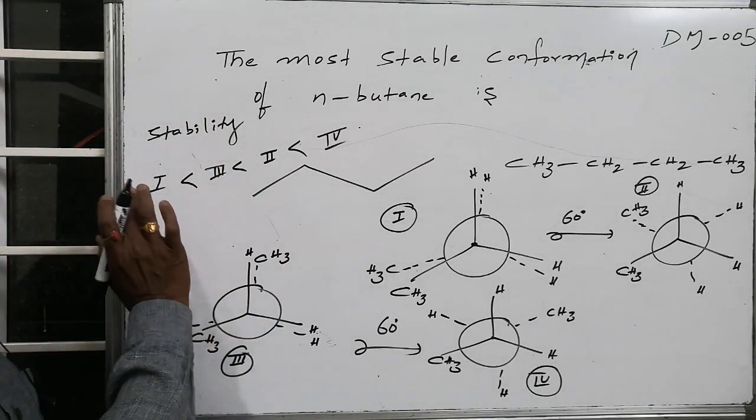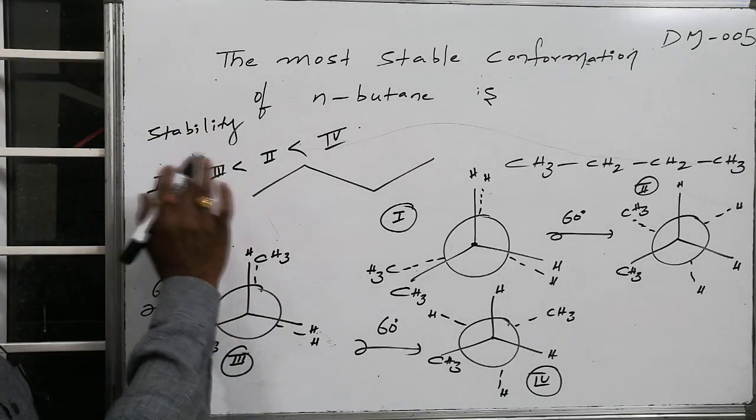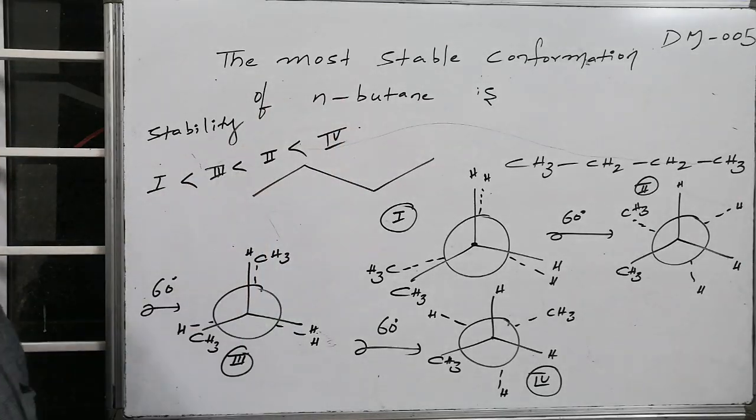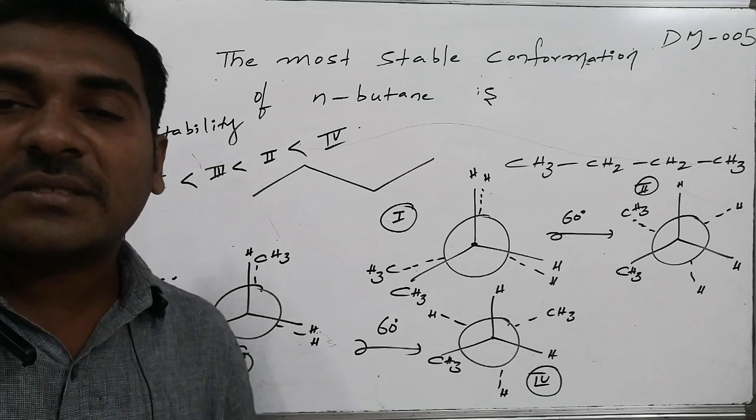Hence, the stability order is one is having least stability, compare it to third. Third is having less stability, compare it to second. Fourth is having highest stability.